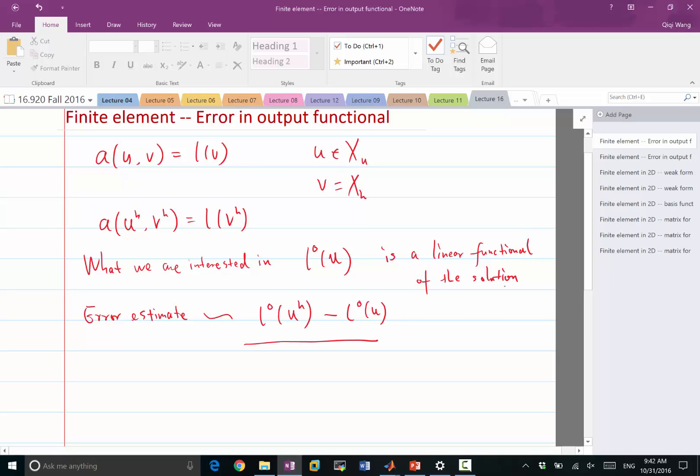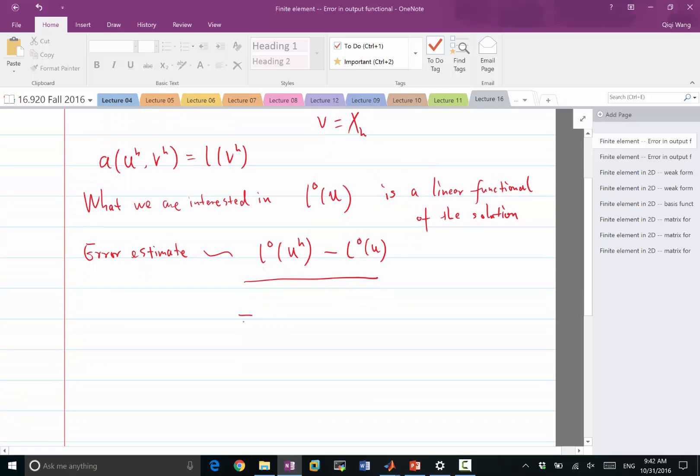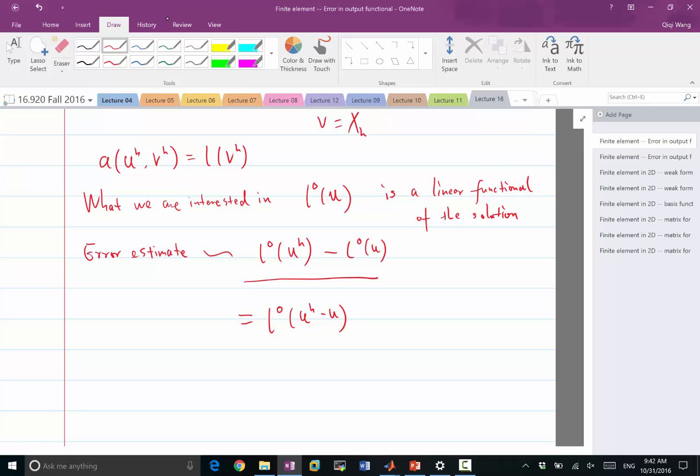So this is what we are trying to approximate. And the linearity of the output functional allows me to say this is actually equal to Lo operated on U_H minus U. So that's simply linearity. So how do I estimate that quantity? To estimate that quantity, I'm going to introduce another equation. I'm going to introduce what's called the adjoint equation.